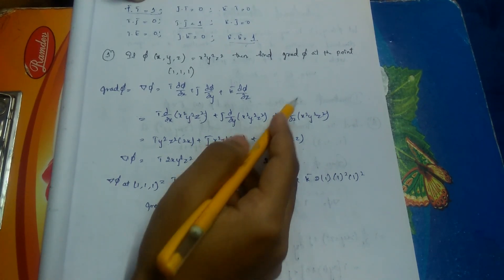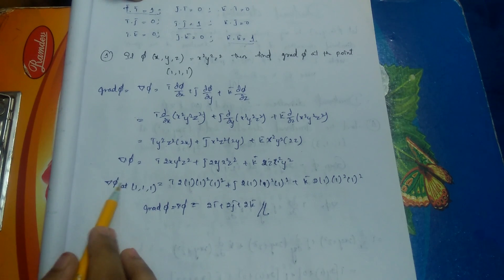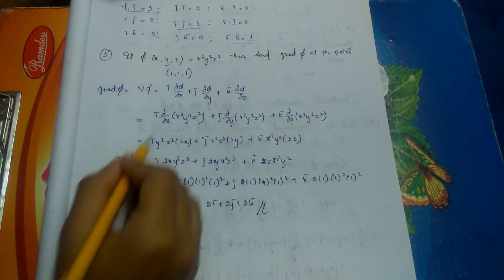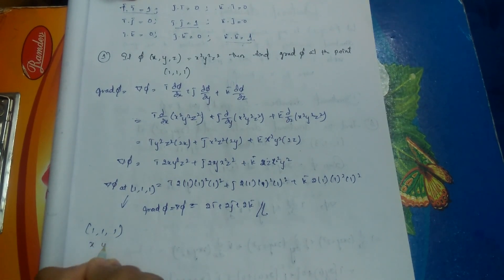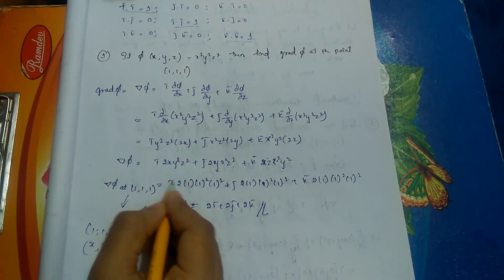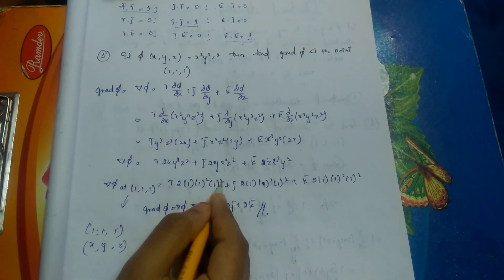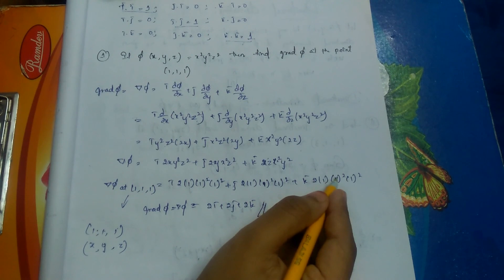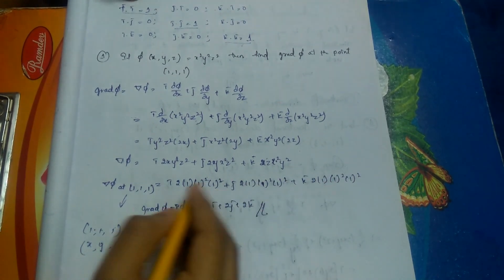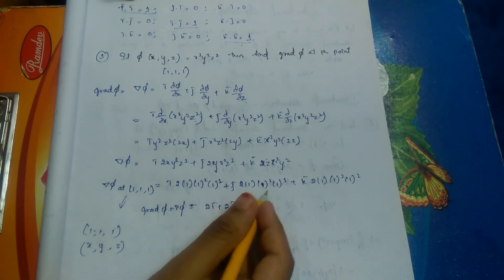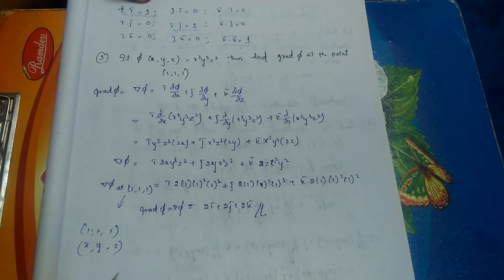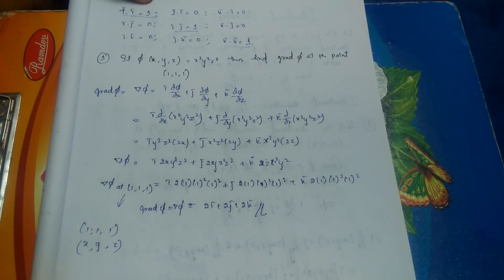At point (1,1,1), substitute x=1, y=1, z=1: del π equals i-bar·(2·1·1·1) plus j-bar·(2·1·1·1) plus k-bar·(2·1·1·1), which gives 2i-bar plus 2j-bar plus 2k-bar. This is the grad π or del π at (1,1,1). This type of question can be asked for one mark.